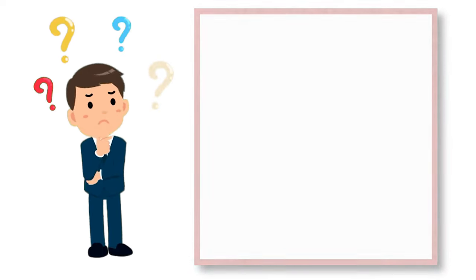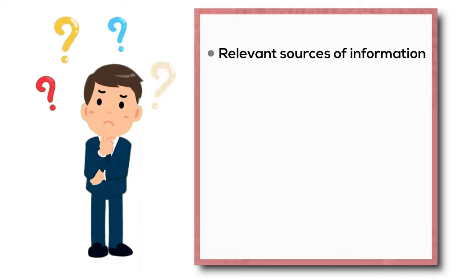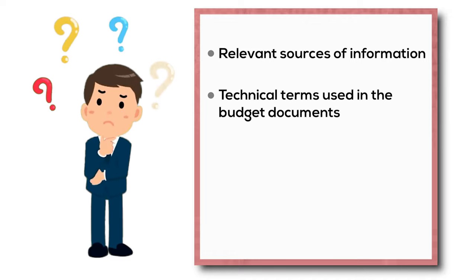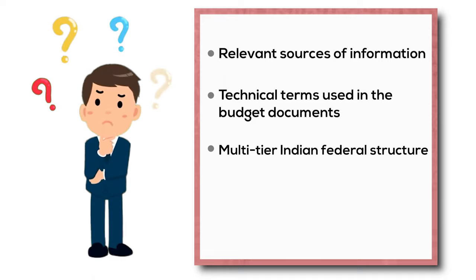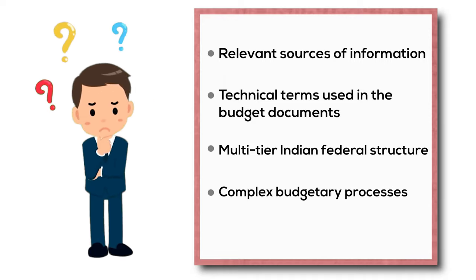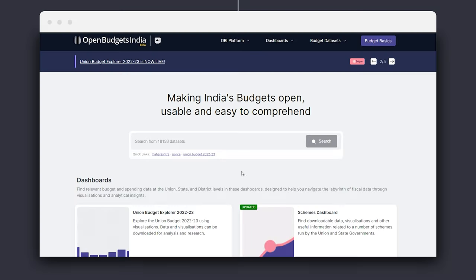This is largely due to lack of adequate knowledge about relevant sources of information, technical terms used in the budget documents, multi-tier Indian federal structure, and complex budgetary processes, among others. To address this, a Budget Basics section has been integrated on Open Budgets India, or OBI portal.